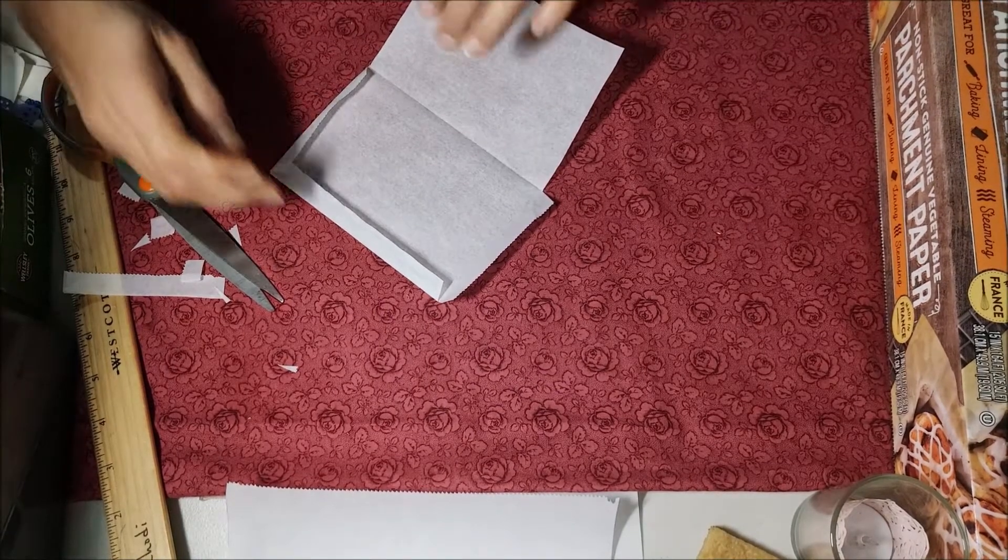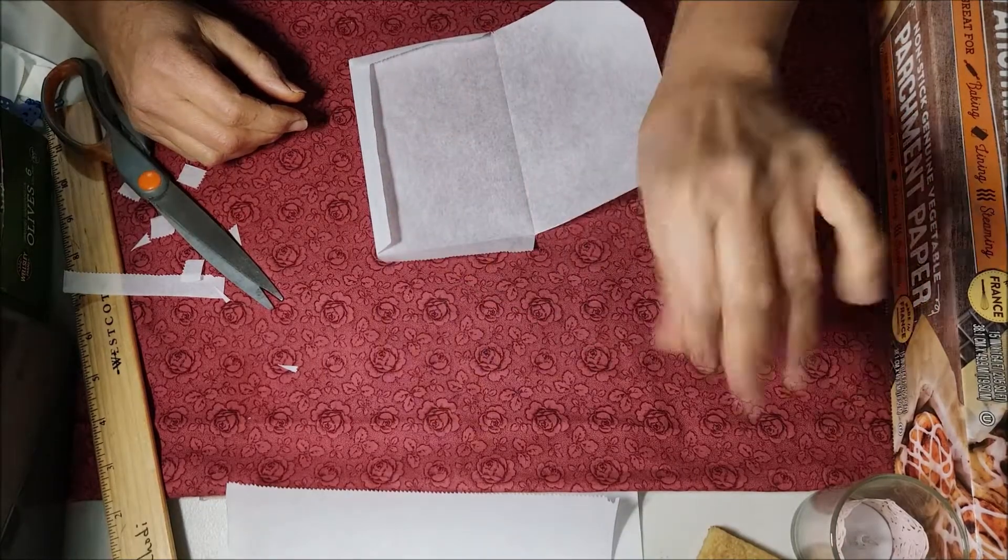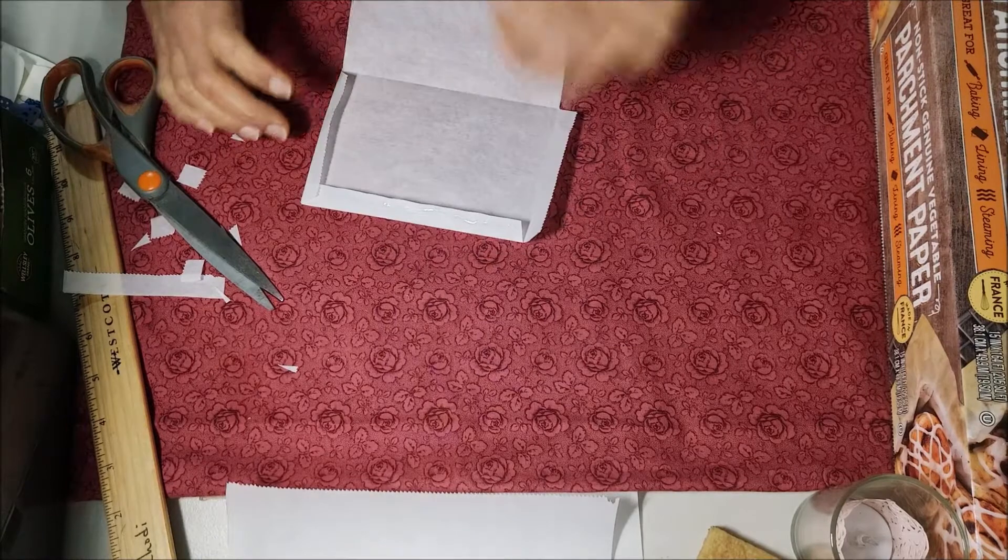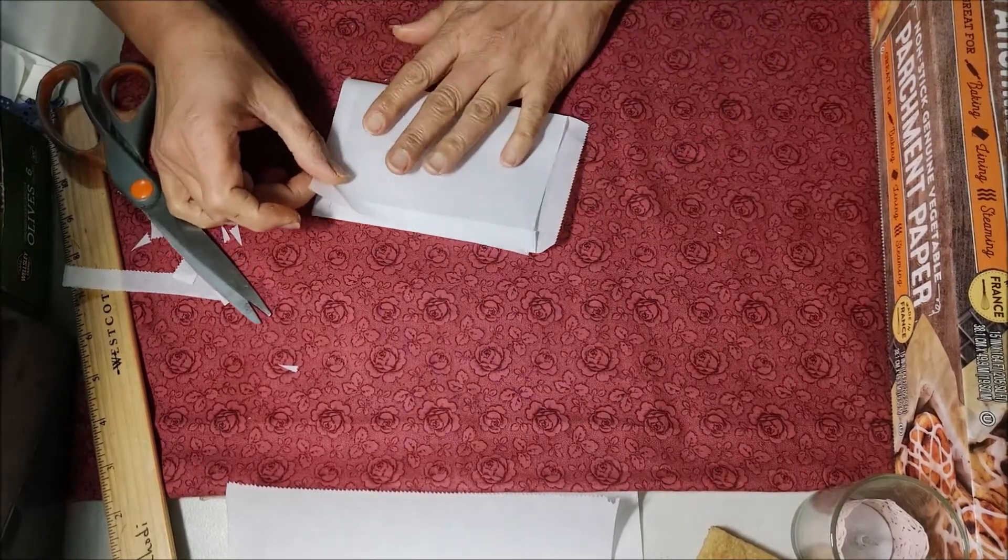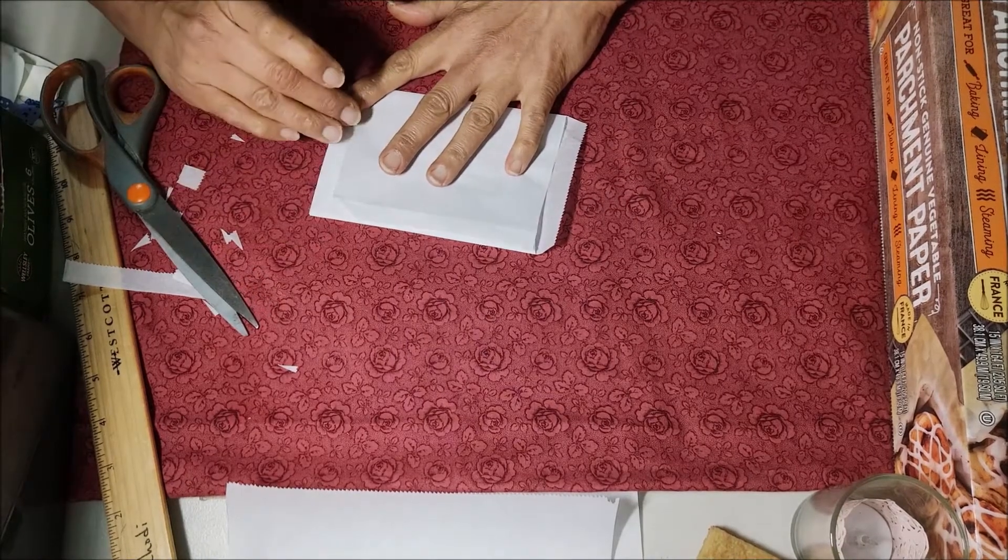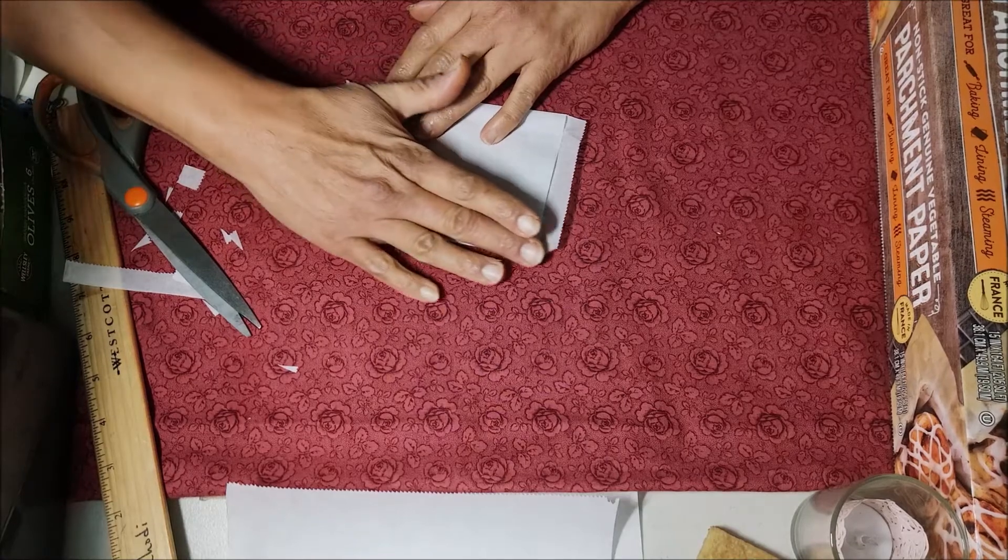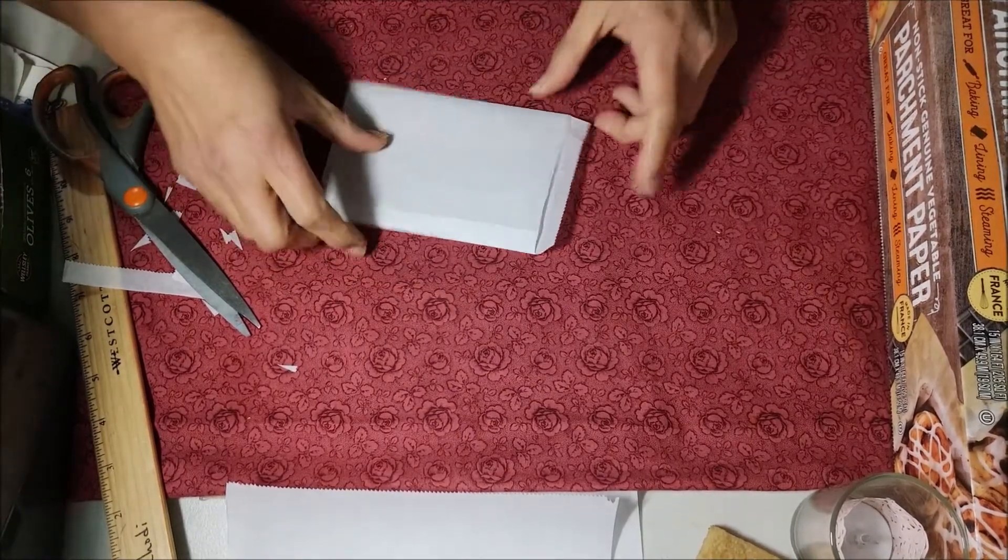We cover the glue so it doesn't get damaged. And now we are ready to close our little envelope. Then, simply gently we bring each part to its place. And we have the little envelope.